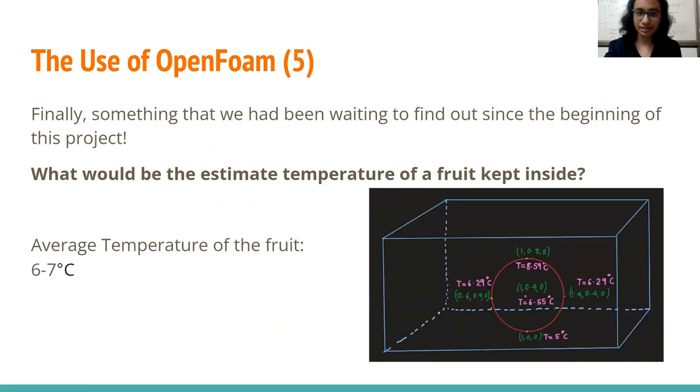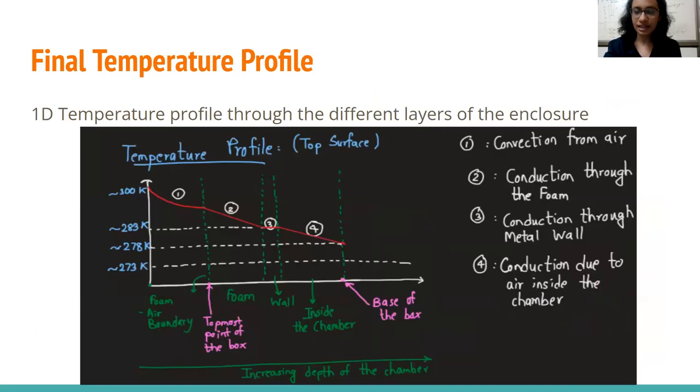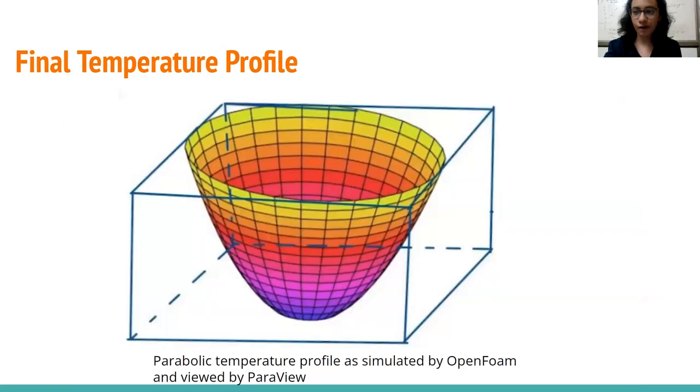After this, we found the estimated temperature of the fluid kept inside, which is what our goal was. We found it to be 6 to 7 degree Celsius. We then validated it with empirical correlations obtained from the internet and we found out that we were very close to the ideal storage temperatures for a large variety of foods. After validating our results, we then moved on to find the temperature profile. This is the 1D numerical analytical temperature profile that we had obtained in the start of the project. You can see that it follows convection from air, followed by conduction through the foam, followed by conduction through the metal wall and conduction to the air inside the chamber. You can observe that the conduction part of the temperature profile is a linear slope whereas the convection part is not. The conduction part through metal wall is a steeper slope than conduction through the foam. This is the temperature profile obtained by OpenFOAM. It is parabolic in nature. It was obtained by OpenFOAM and viewed by Paraview.